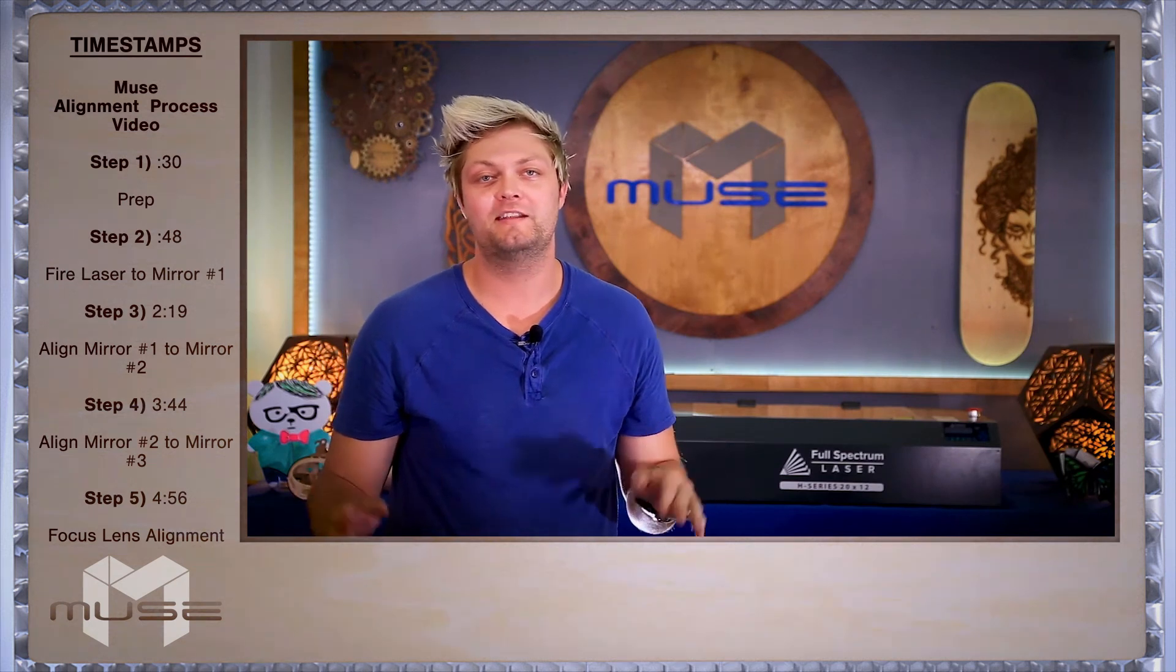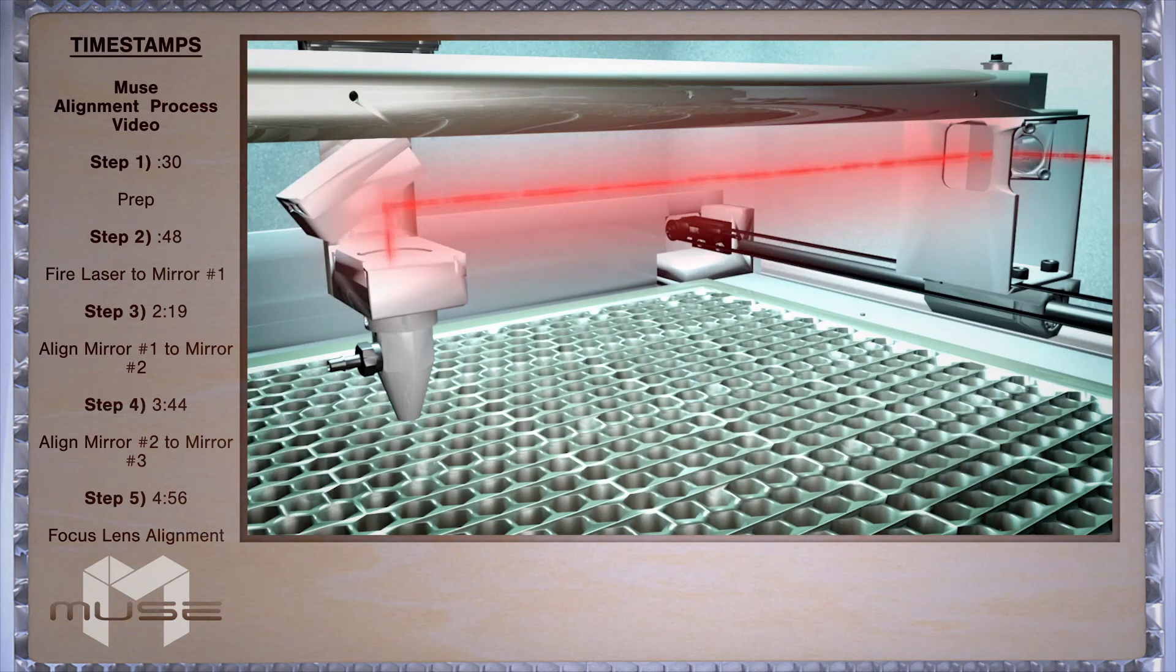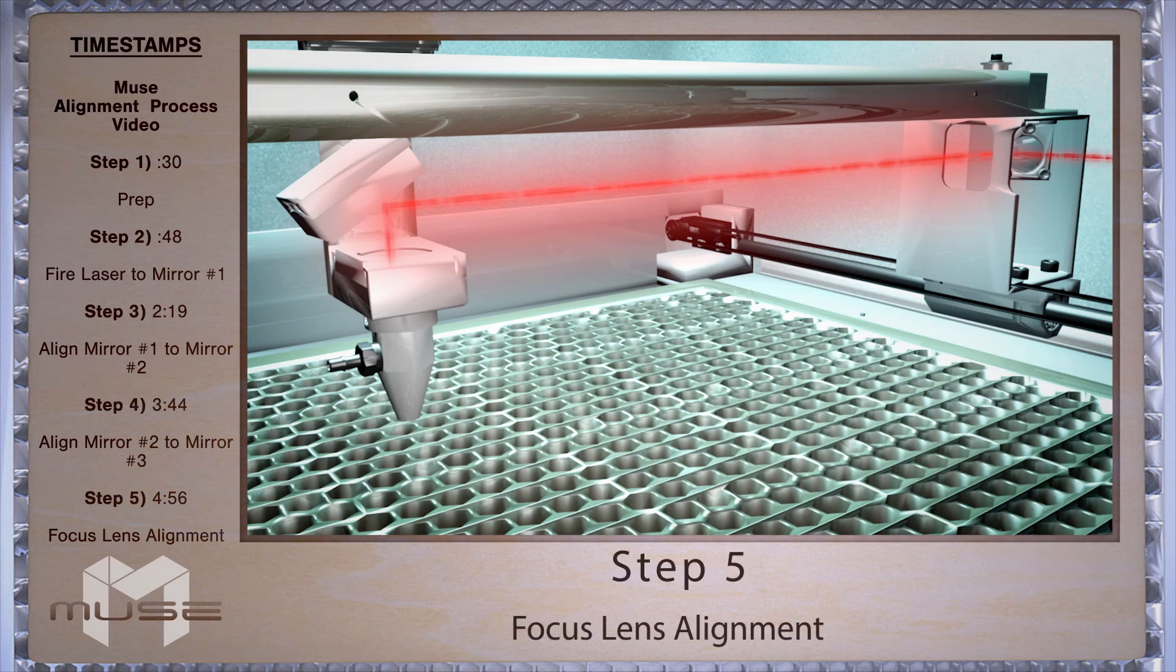And now we're almost done. The focus lens is at the bottom of the laser head. To avoid clipping of the laser beam you always want it to hit the center of the lens.